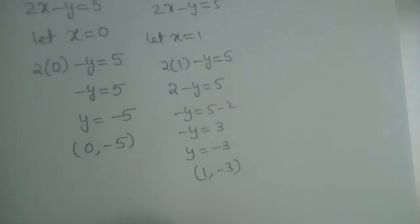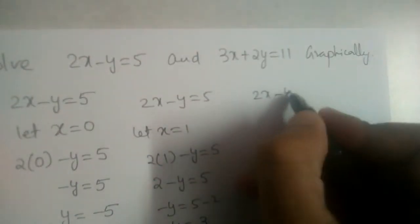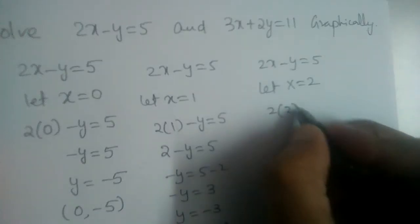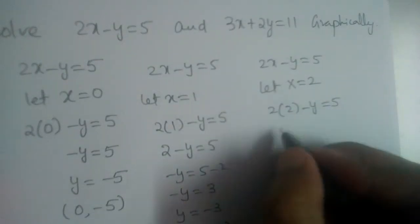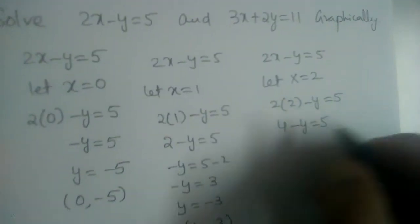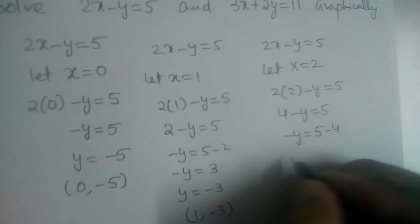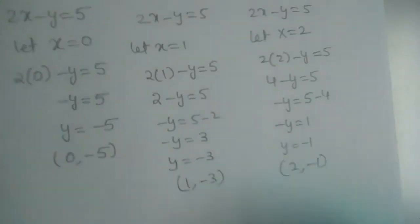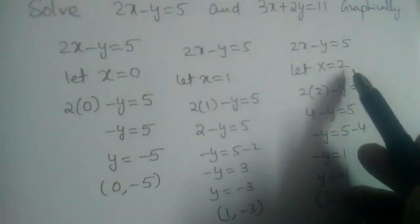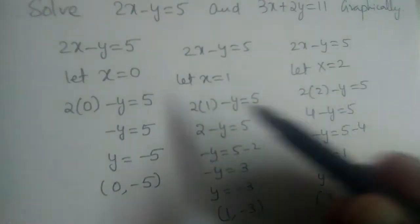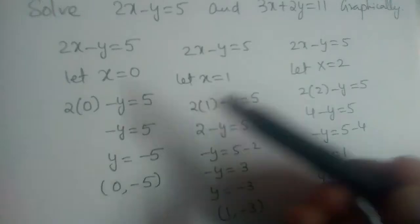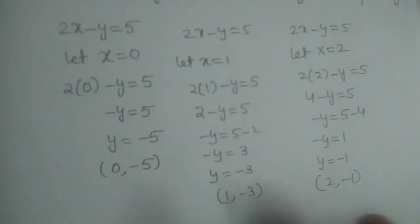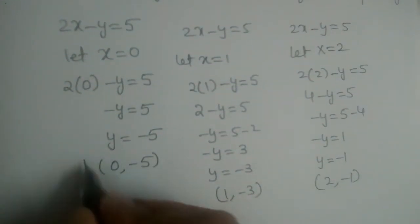Now let us substitute x is equal to 2. This gives 2 into 2 minus y is equal to 5, so 4 minus y is equal to 5, minus y is equal to 1, and y is equal to minus 1. The point is 2 comma minus 1. We could have substituted any other value like x equal to 10 or x equal to minus 5, but we substitute reasonable values.